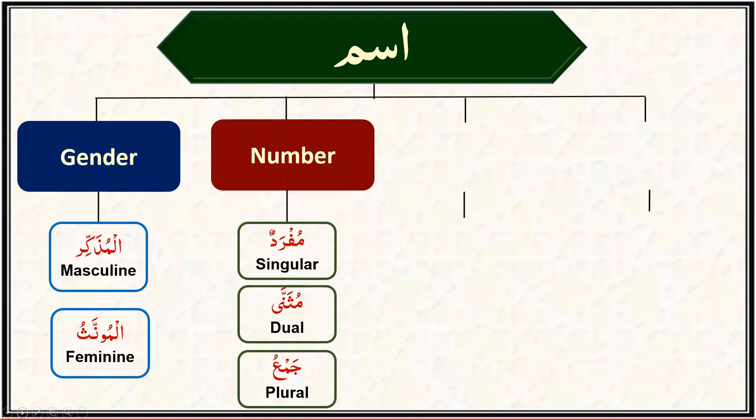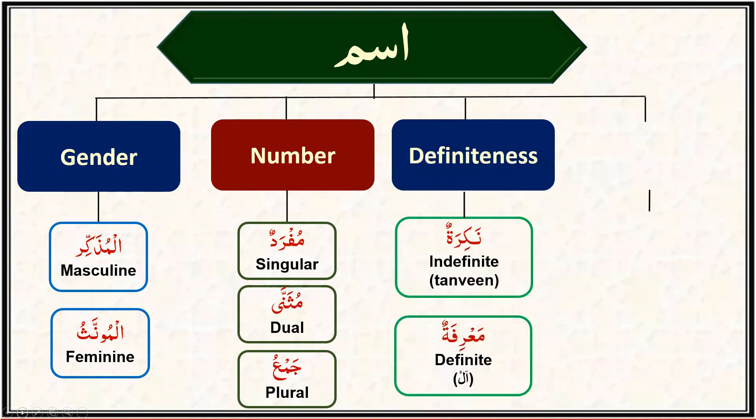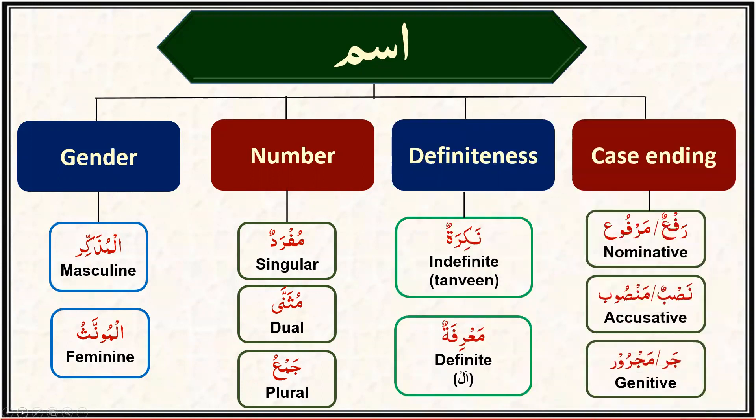The first property of an ism is gender, which can be divided into masculine and feminine. The second property is number: singular, dual, and plural. The third property is definiteness: definite and indefinite. The fourth property is case ending. Out of these four properties, you are already familiar with gender, number, and definiteness, whereas case ending is a new property specific to Arabic.